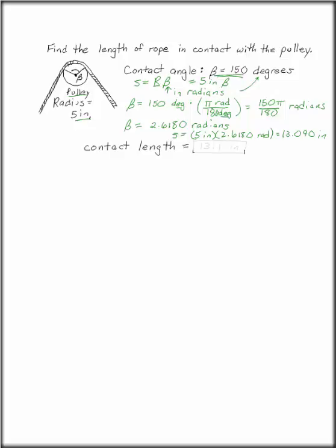Now that we're at the end, the contact length we can round to be 13.1 inches. You want three significant digits when you're done, but not until then. Thank you.